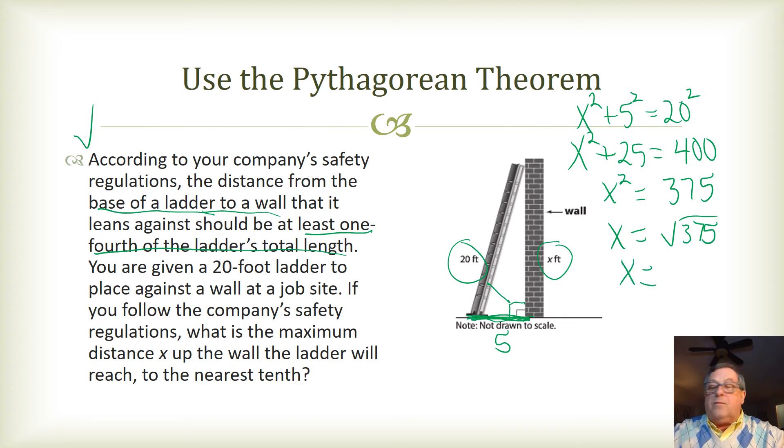And I don't have to worry about the negative, because the distance can't be negative. So I'm going to take the square root of 375, and that is 19.36491673, but I'm supposed to round this to the nearest tenth, so I've got 19.36.